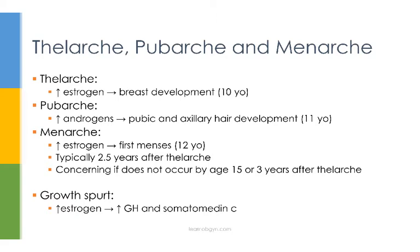Menarche occurs due to increasing levels of estrogen. During puberty, there's also a growth spurt. This increase in growth is due to increased amounts of estrogens, which in turn leads to increased levels in growth hormone and somatomedin C.